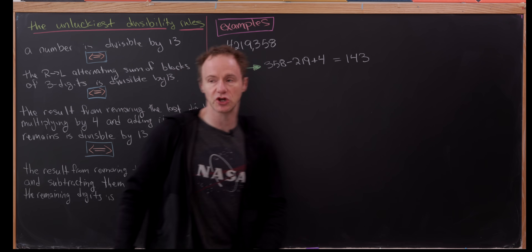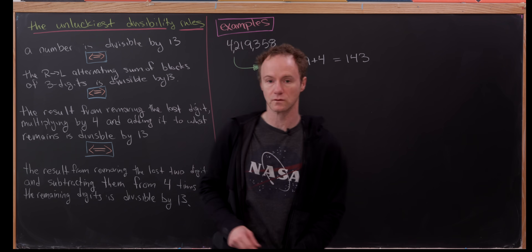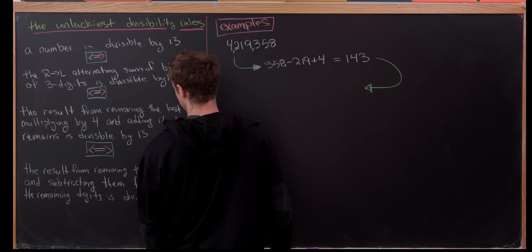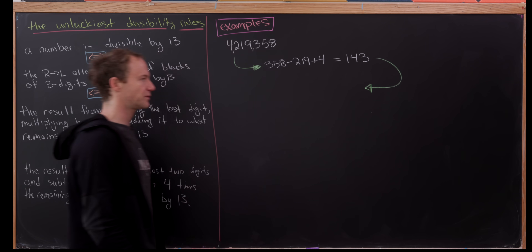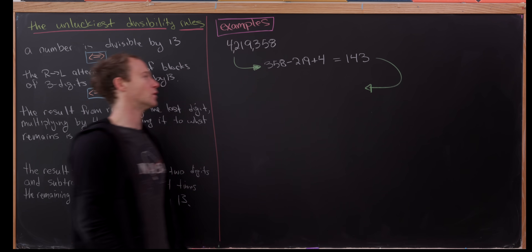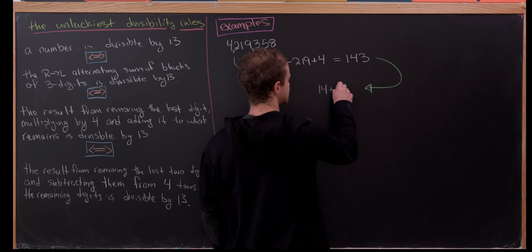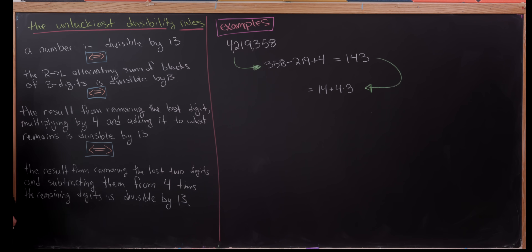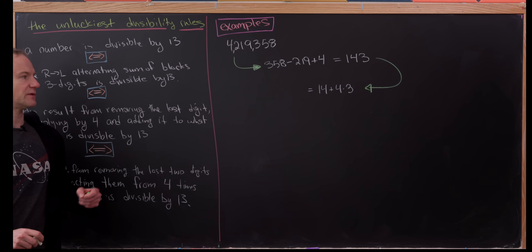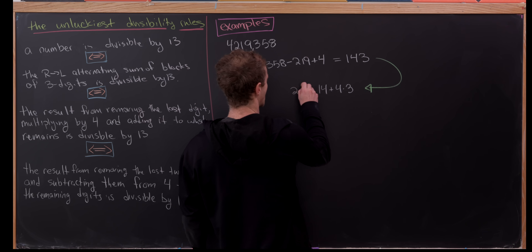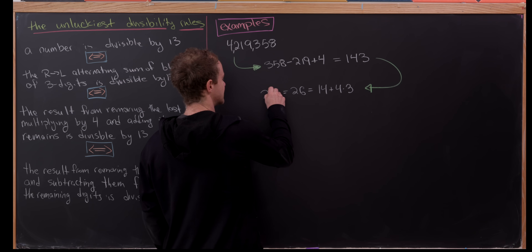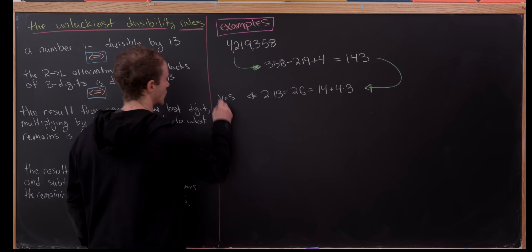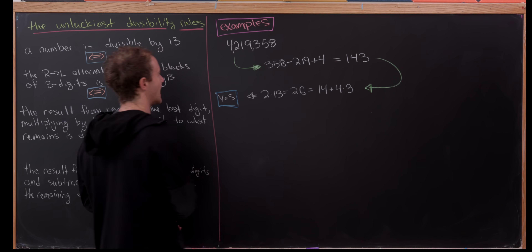This is a good opportunity to use our second rule. We take 143, remove the last digit, multiply it by four, and add it to what remains. So that means we have 14 plus 4 times 3. That's 14 plus 12, which equals 26. And 26 is 2 times 13, so yes — our original number is divisible by 13.